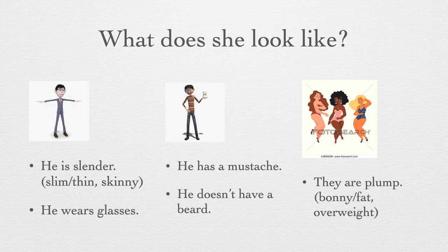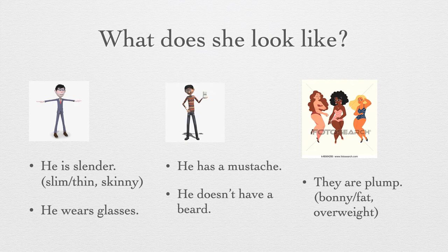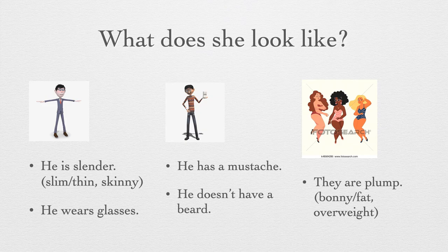He wears glasses. Glasses são os óculos. He has a mustache. A mustache, o bigode. He doesn't have a beard — he's shaved. Então, ele não tem barba, tem bigode. They are plump. Plump é uma forma mais neutra de falar que a pessoa é gordinha ou cheinha. You could also say they are curvy — curvy tá mais pra um elogio. E fat or overweight sounds more negative — são mais negativos esses adjetivos.